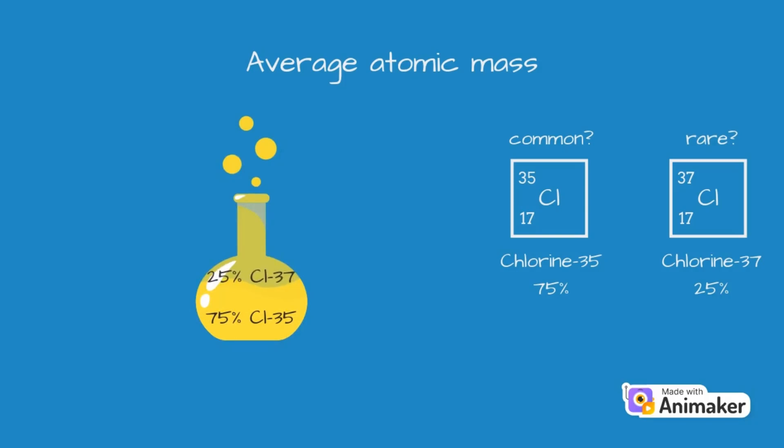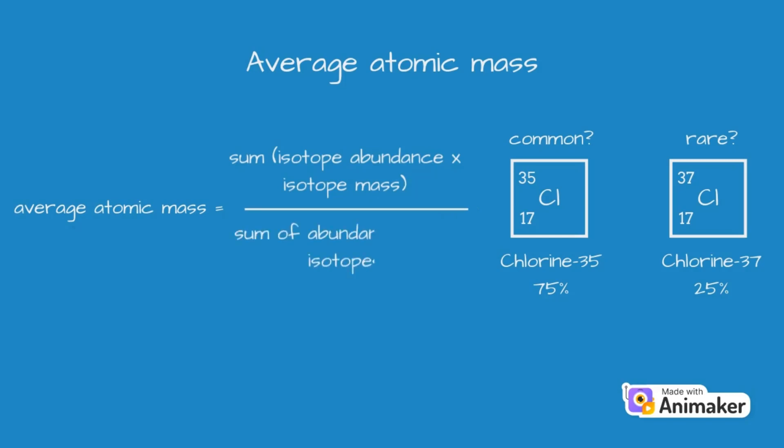To calculate the average atomic mass, the equation is: sum of the isotope abundance times the isotope mass, divided by the sum of the abundances of all the isotopes. So, for chlorine, it will be 75 times 35, plus 25 times 37, divided by 75 plus 25. On the numerator, we have 2625 plus 925, which adds up to 3550. On the denominator, 75 and 25 add up to 100.